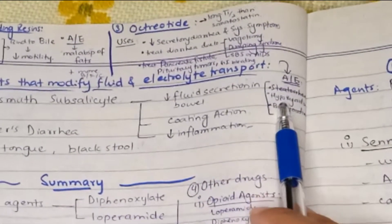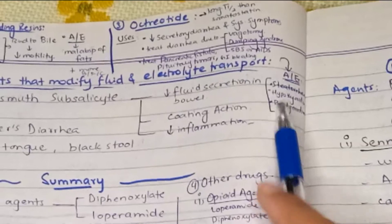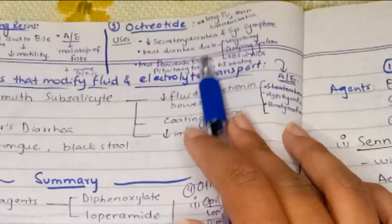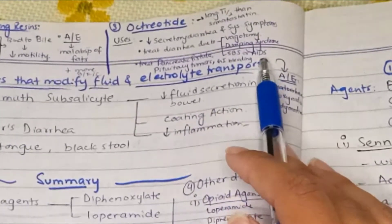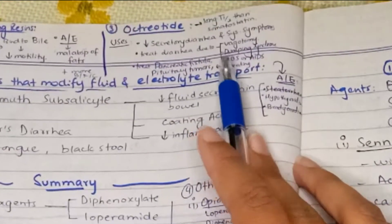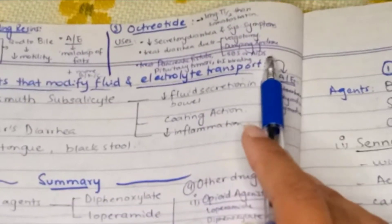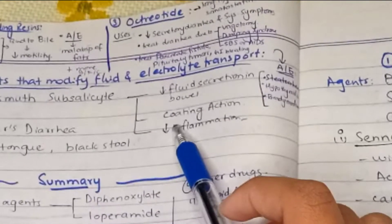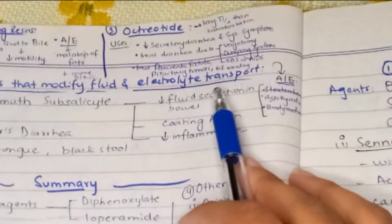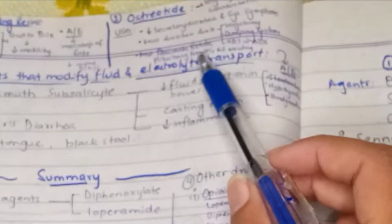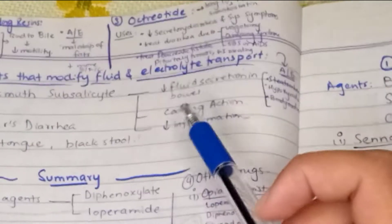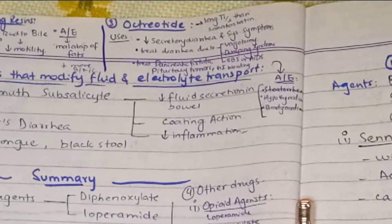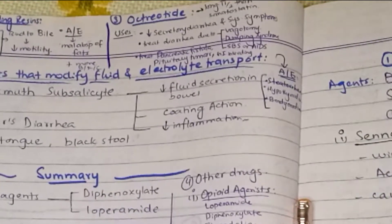The uses of octreotide include decreasing secretory diarrhea and systemic symptoms. It is used to treat diarrhea due to vagotomy, dumping syndrome, short bowel syndrome, or AIDS. It is also used to treat pancreatic fistula by decreasing pancreatic secretions, and to treat pituitary tumors or GI bleeding. The adverse effects of octreotide include steatorrhea, hypothyroidism, and bradycardia.